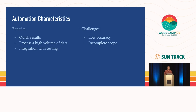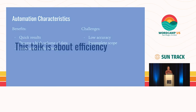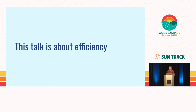Automation is characterized in the accessibility world by quick results. It processes a high volume of data. You can crawl your entire website, pull up all of these documents, and integrate it with other testing tools. But it also comes with challenges: it has an extremely incomplete scope — that's that 30% — and relatively low accuracy outside of some very objective problems. But that still comes with a lot of value. This talk is ultimately about efficiency — using consultants effectively and using automation effectively.